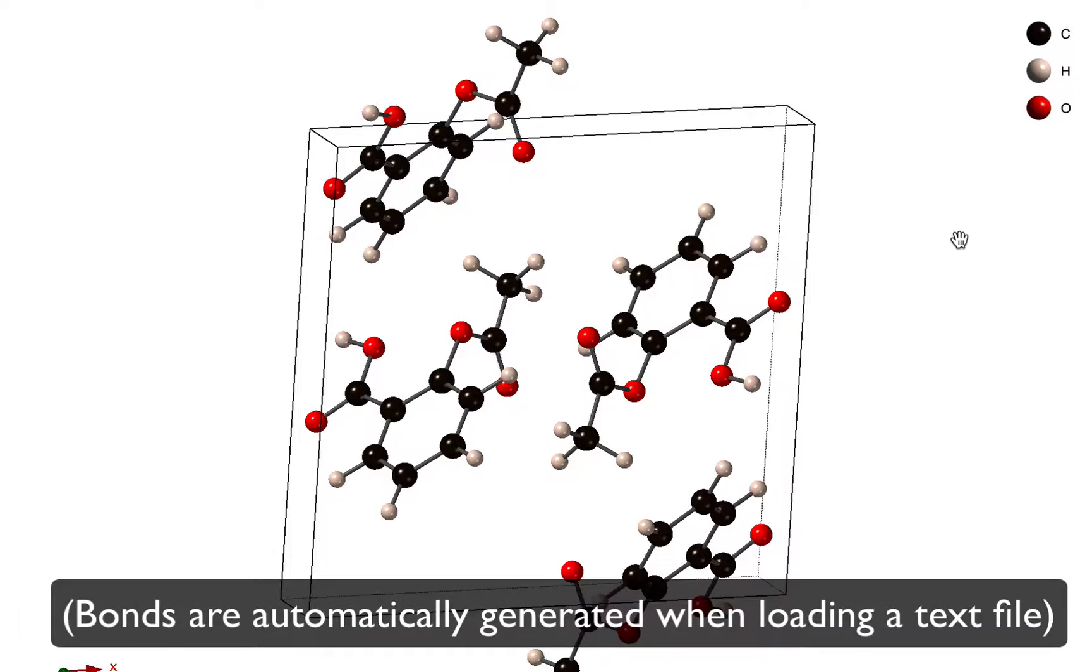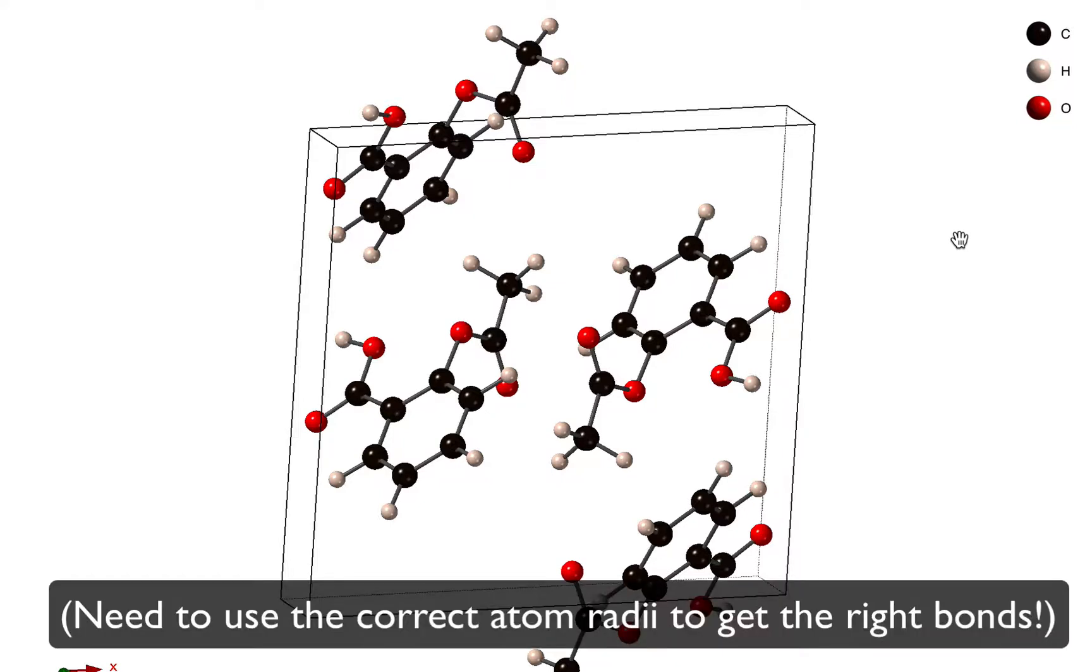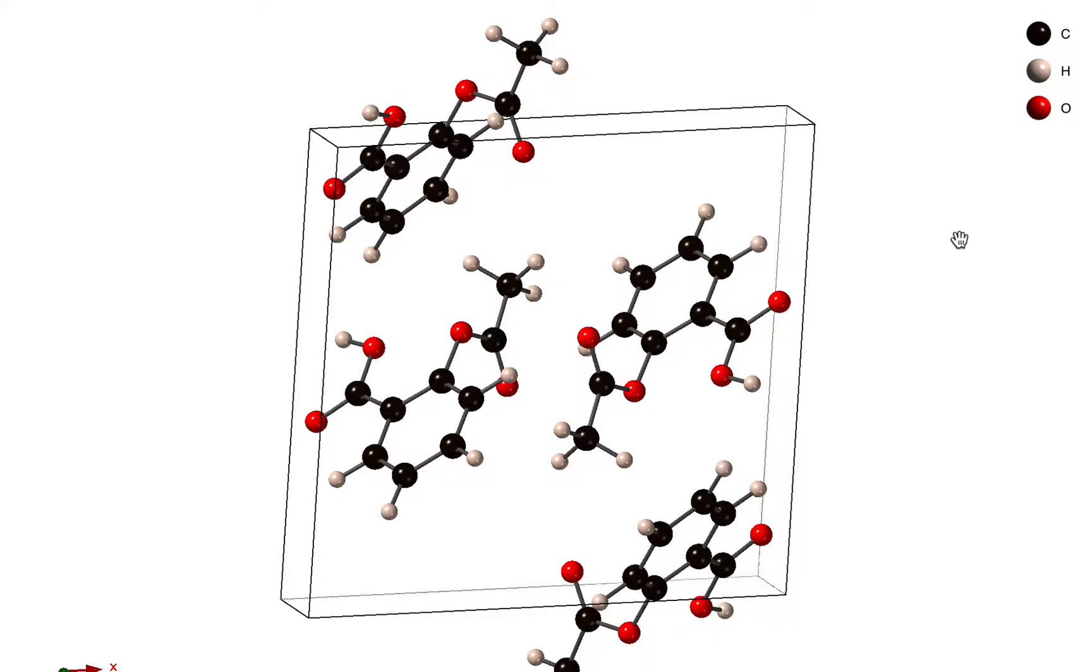CrystalMaker will automatically generate bonds when reading from a text file, and it generates bonds based on the interatomic distances. The idea is that bonds are created if two atoms lie within the sum of their radii plus or minus 15 percent.